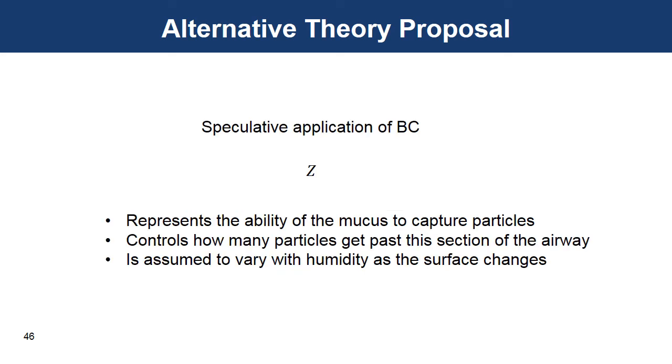Given a proposed value of the impedance, it would be possible to solve the convection diffusion equation either in its original form or the parabolic approximation to it to determine how many particles reach the exit of the section of the airway in relation to the number of particles that enter. The assumption would be that the humidity determines the impedance and then the impedance determines the infectiousness by controlling how many particles get past that section of the airway.